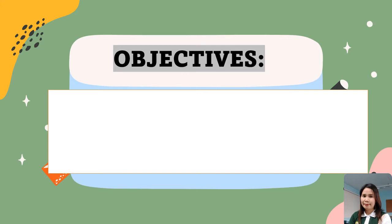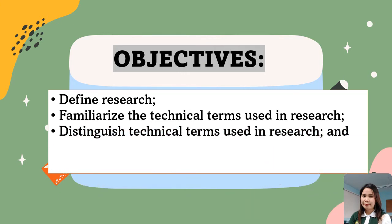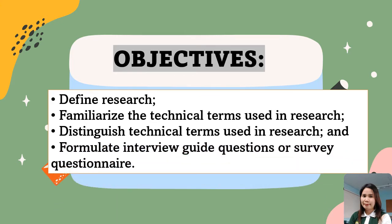Our learning objectives for this lesson: after going through this lesson, you are expected to first define research. Next, familiarize the technical terms used in research — you don't have to memorize, but you have to understand and familiarize the technical terms. You also have to distinguish technical terms used in research, and lastly, formulate interview guide questions or survey questionnaire.